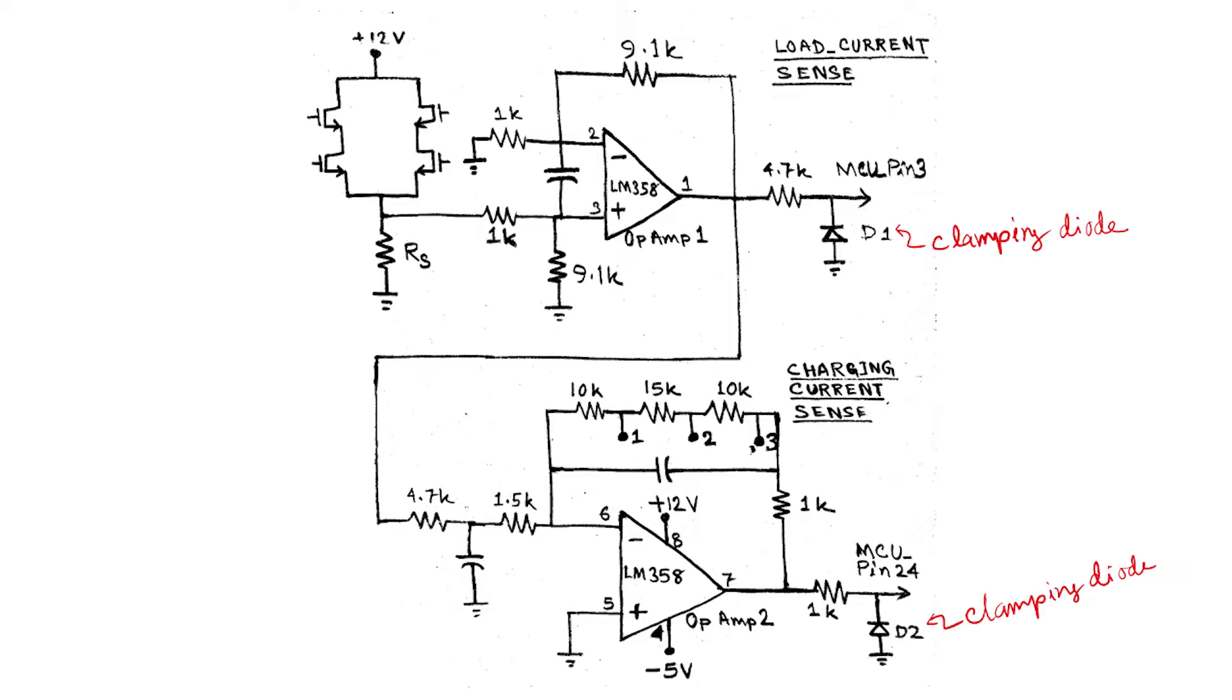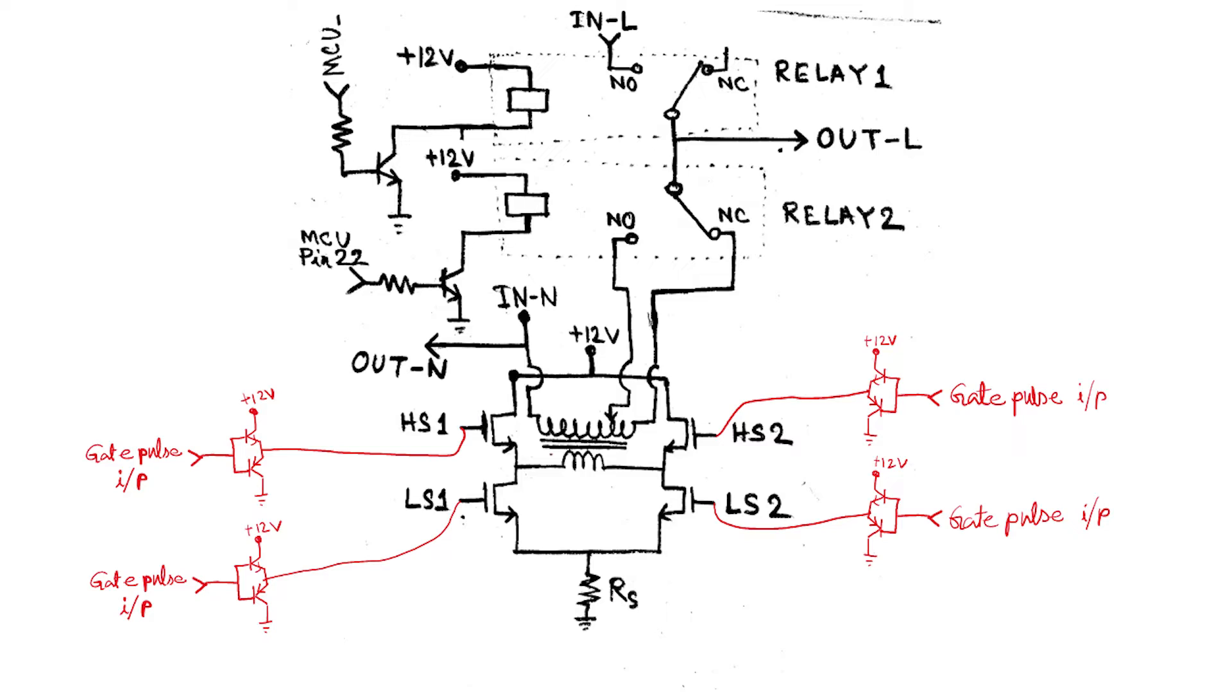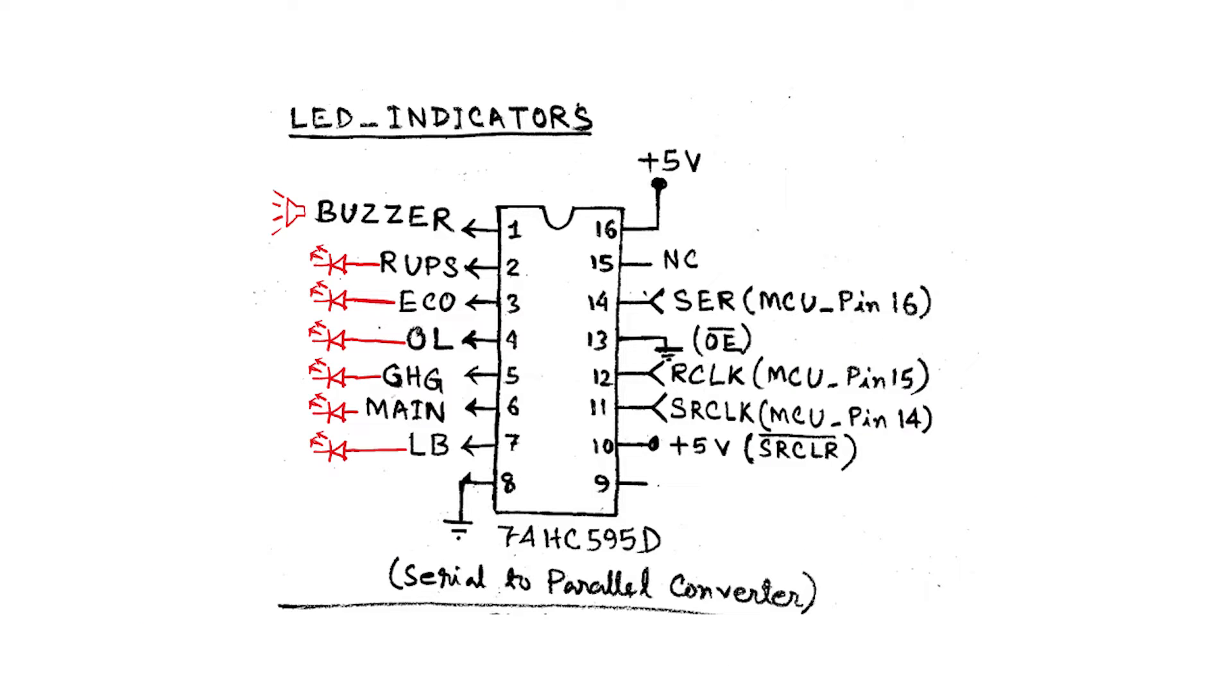The only drawback as I felt for this inverter is that it uses a bipolar transistor based MOSFET gate drivers. The typically used gate driver ICs are much better in terms of switching speed, delay between input output, and the power consumption also. For LED indicators, a 74HC595D IC has been used, which is an 8-bit serial to parallel converter with output latch. The buzzer is also controlled from this IC.